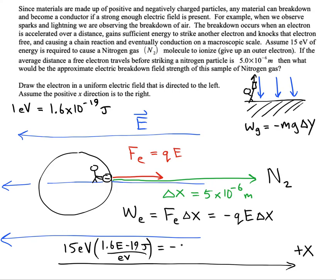Set that equal to negative 1.6 times 10 to the minus 19 coulombs. That would be the charge of our electron, times E, times 5 e minus 6 meters.